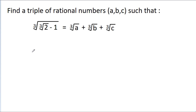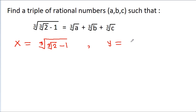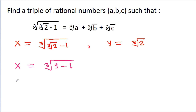So, if we take x equal to the cube root of (2-1) and y equal to the cube root of 2, then x will be equal to the cube root of (y-1), and x cubed will be equal to y-1. And we have y equal to the cube root of 2.